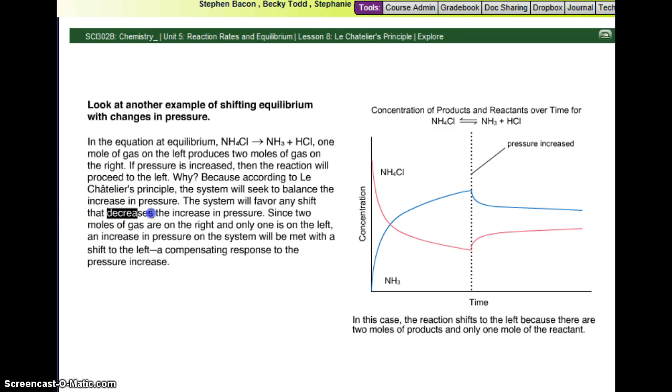So in other words, it kind of compensates and says, ooh, I don't like this increase in pressure, let's get rid of it. Since 2 moles of gas are on the right side and only 1 mole is on the left, an increase in pressure on the system will be met with a shift to the left, a compensating response to the pressure increase. So here we say that the reactants are changing into products, and then, oh, we increase the pressure, and look, more reactants are being made. We have a higher concentration of reactants after the pressure increase than we did before the pressure increase.